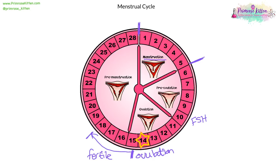Then premenstruation happens and menstruation begins again on day one. From days one to five, you've got the actual menstruation happening where the uterine lining is shedding. From day six up to day 14, the uterine lining is preparing for implantation. This is also where follicle-stimulating hormone is getting the egg ready. Then you've got ovulation, and then luteinizing hormone kicks in after ovulation. For a double student, you just need to know the cycles: day one to five is menstruation, then egg ripening, then day 14 ovulation, the fertile period, and back to menstruation.